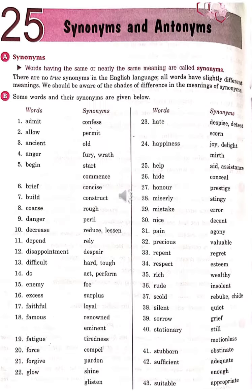Synonyms and Antonyms. Synonyms: words having the same or nearly the same meaning are called synonyms. There are no true synonyms in the English language. All words have slightly different meanings. We should be aware of the shades of difference in the meanings of synonyms. If any word seems completely the same, there is a little difference in degree, and we have to focus on that.